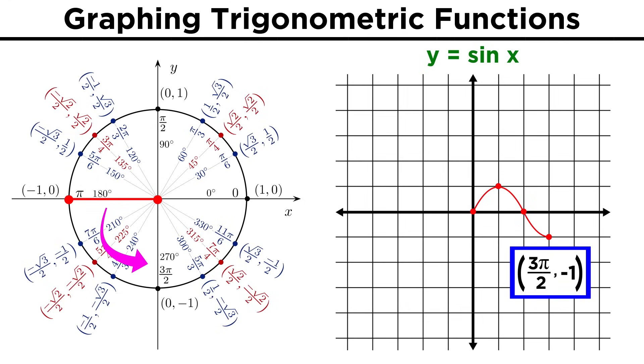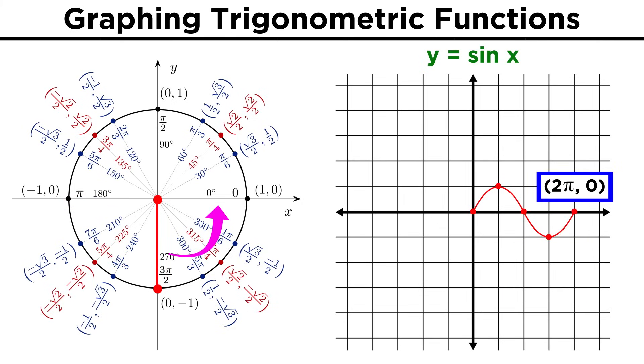Now as we enter quadrant three, we start to get negative values for the y coordinate, and thus negative values for sine x. These will be the same values as the first two quadrants, just negative, until we get to negative one. And then moving through the fourth quadrant, we get back to zero.